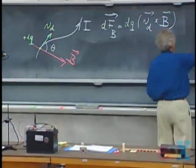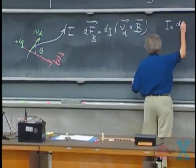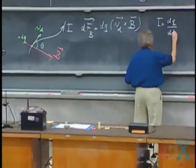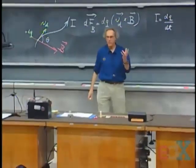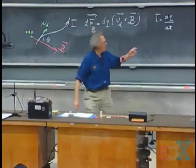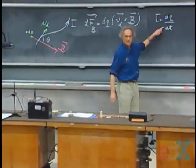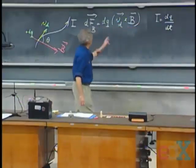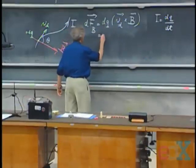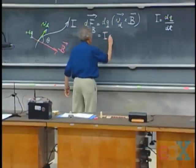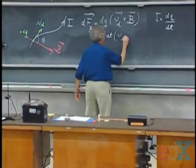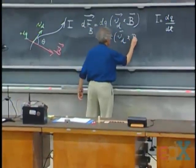The current through the wire, everywhere in the wire must be DQ DT, because that's the definition of current. How many Coulombs per second? The current is always DQ DT. So I can also write this as I DT times VD cross B.